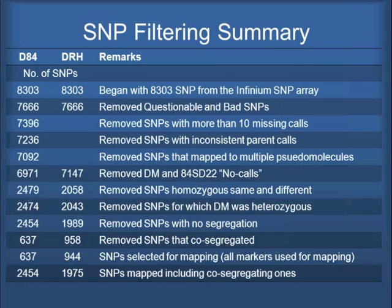Walter asks why we're taking out the ones with segregation distortion. The ones we actually removed were the ones where even though one parent was heterozygous and the other was homozygous, all the progeny were homozygous or all heterozygous — a complete distortion — so it's hard to read those. But yes, we kept in very highly skewed lines, and I'll point that out.